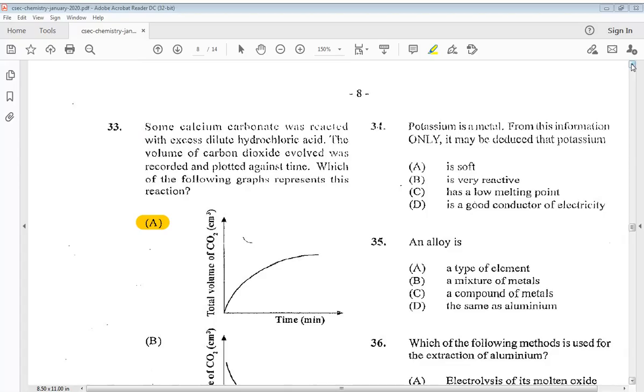Question 34. Potassium is a metal. From this information only, it may be deduced that potassium A is soft, B is very reactive, C has a low melting point, or D is a good conductor of electricity.